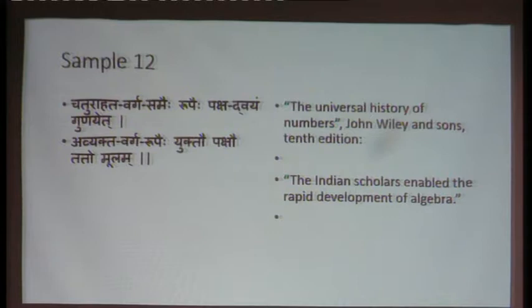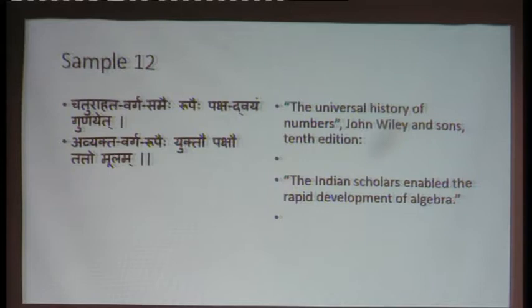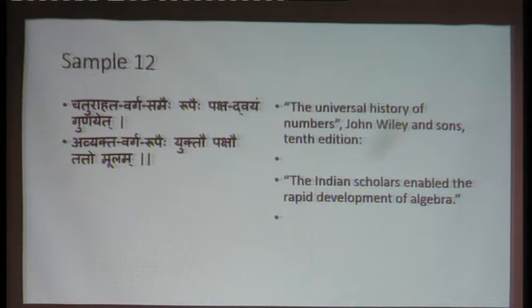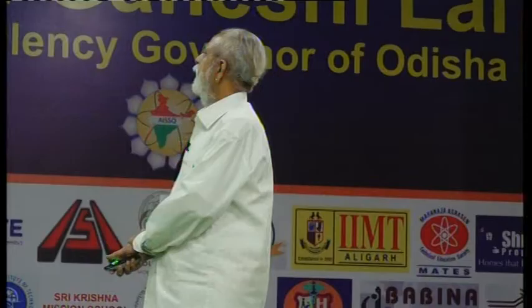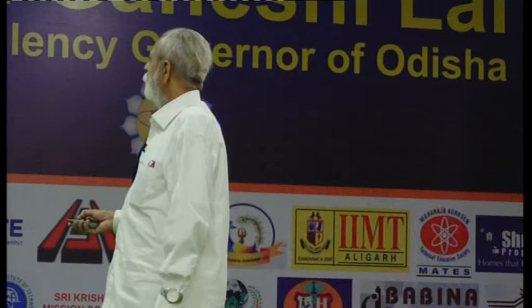This is from yet another book. We are all taught in ninth class how to solve a quadratic equation — there is a formula for the roots in terms of the coefficients, using the square root of b² − 4ac, the discriminant. That formula is available in Shridharacharya's book. Nowadays NCERT books have included this history, so our students know it is an Indian contribution. 'Chaturahata Varga Samaih Rupaih Pakshadvayam Gunayet.' The book 'The Universal History of Numbers' states: 'The Indian scholars enabled the rapid development of algebra.'